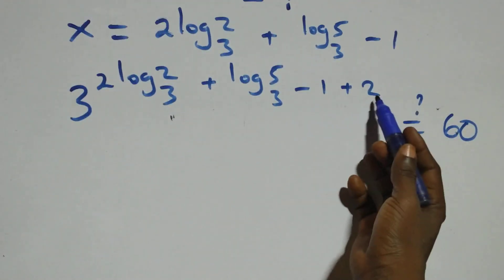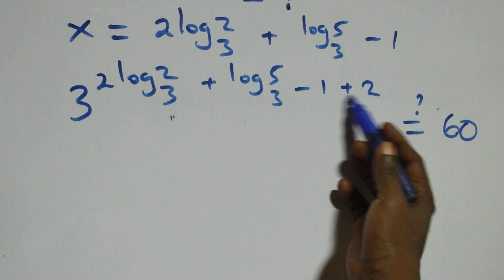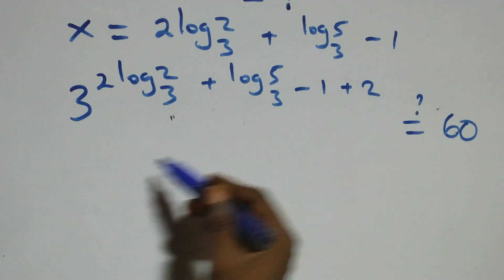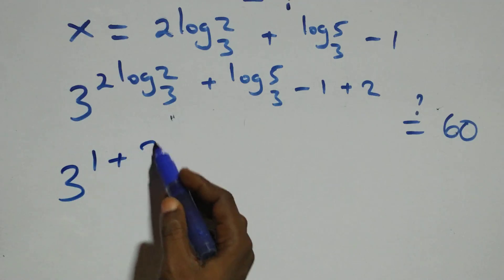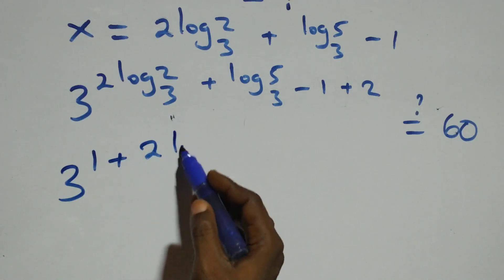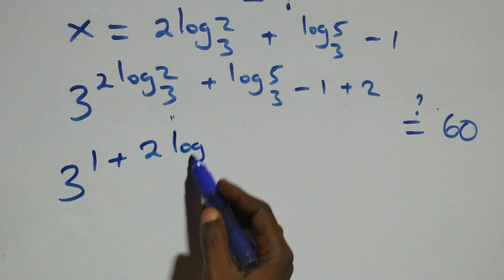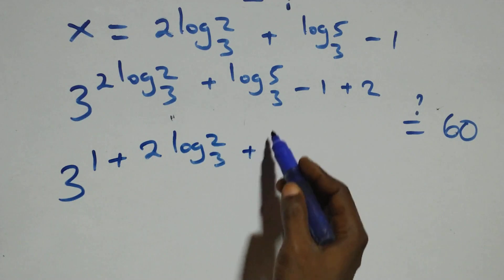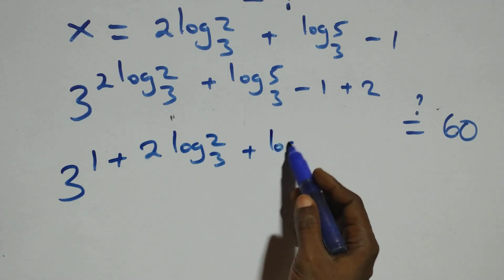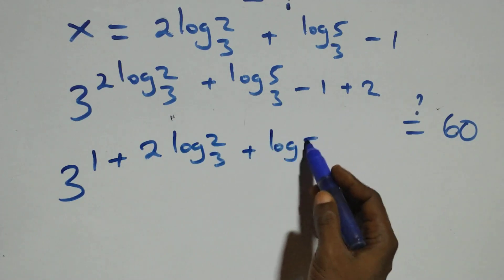Minus one plus two is the same as two minus one, which is one. So we have three raised to the power of one plus two log two base three plus log five base three. Is it equal to sixty?